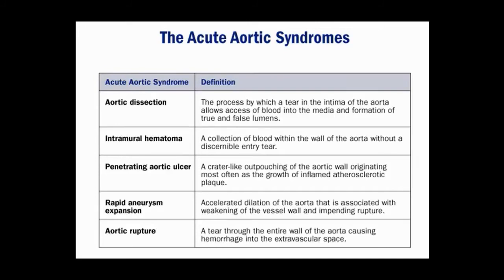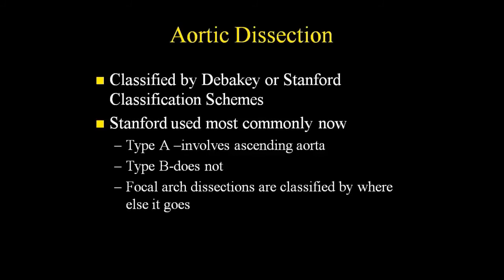The intramural hematoma could be a dissection that sealed off, or it may have come from outside vessels. A penetrating aortic ulcer is an outpouching with a neck on it, visible especially on CT or MRI. Sometimes when people have a rapidly expanding aortic aneurysm, they can have chest pain from that. And then there's aortic rupture, typically associated more with trauma, but it can also be associated with a chronic aortic aneurysm.